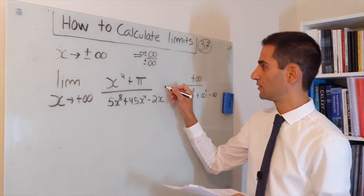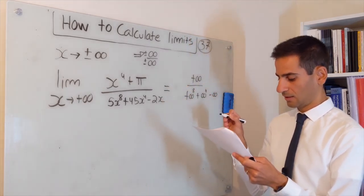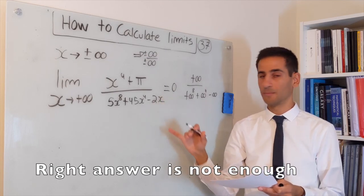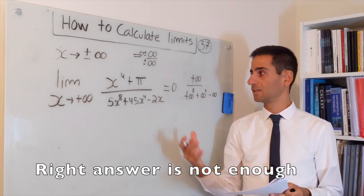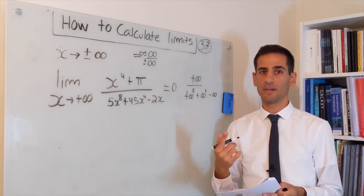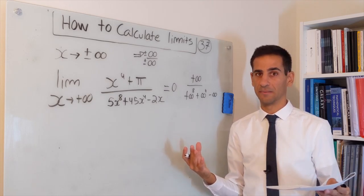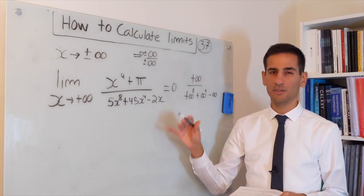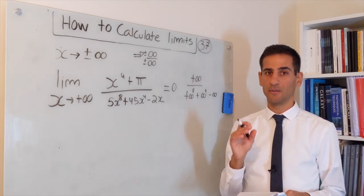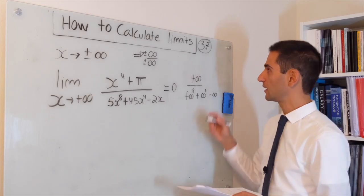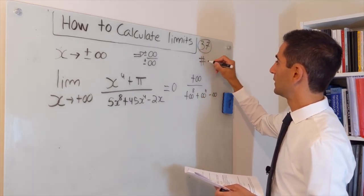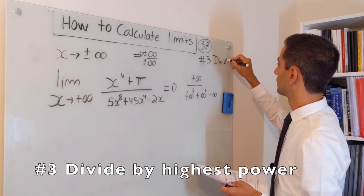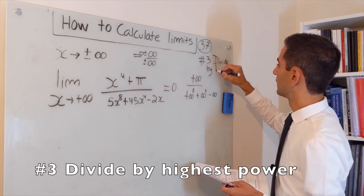It actually means that this entire thing will be going to zero. But it is not enough to just say that this goes to zero, even though it is true. On an exam or worksheet, if you do this, you may get one mark — that's one mark out of something like ten. So there's only a tiny percentage of the full marks. We need to show this in a mathematically rigorous way, and you do that with technique number three: divide by the highest power.